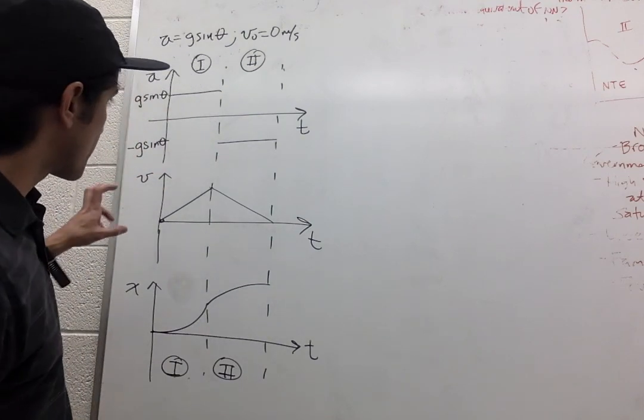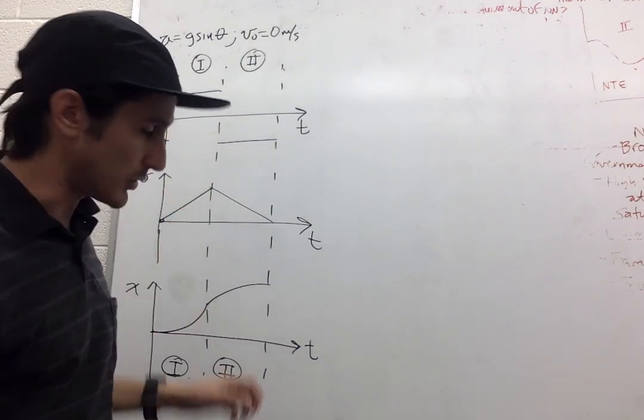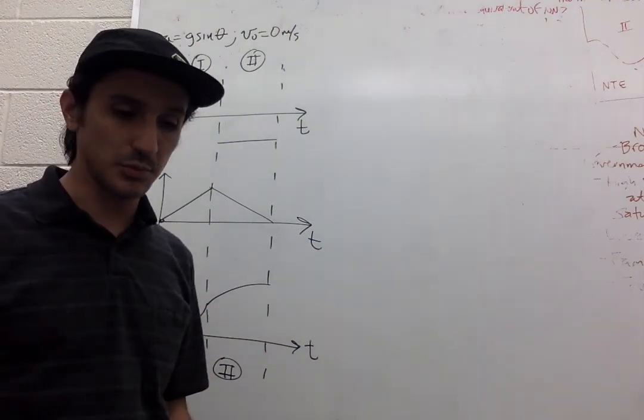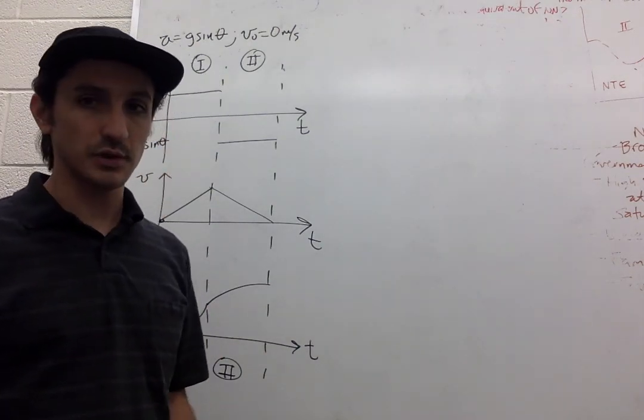So now that we know how the bicycle is going to accelerate, how the velocity is going to change, and what is going to be the position, let's look at the equations of motion, so the kinematics.